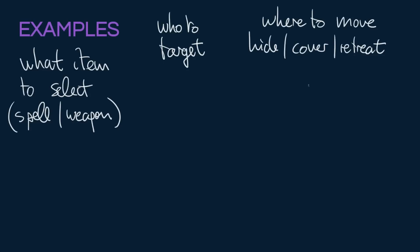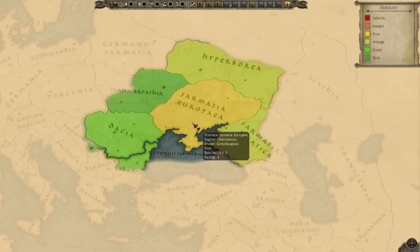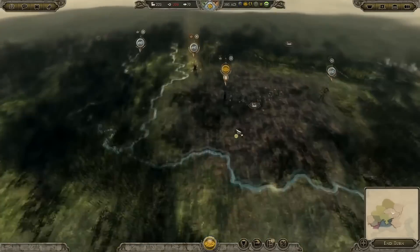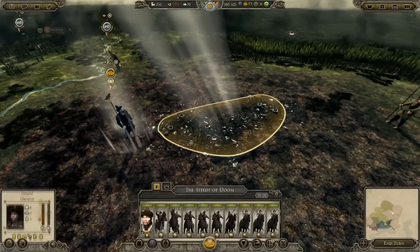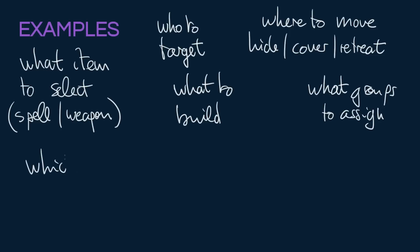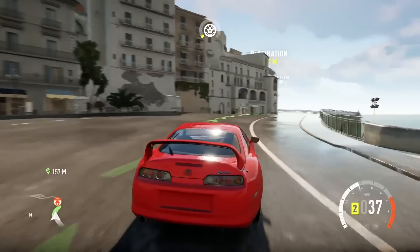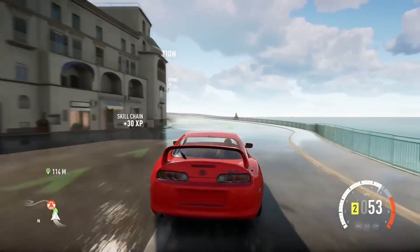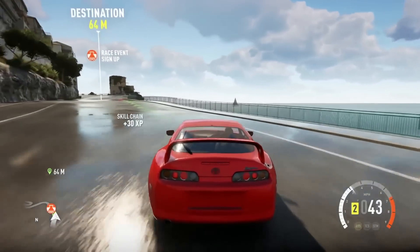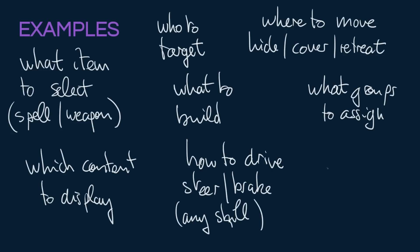The different groups that should be assigned by some kind of strategic commander, for example, in a real-time strategy game, deciding what to build or to research, or the type of content that should be displayed within an application. For example, if you want a player to really enjoy the next quest, what quest should you select for that player? Deciding exactly where to drive, or steer, or any kind of skill-based decision.